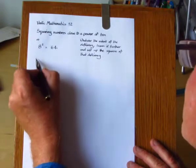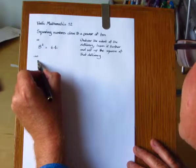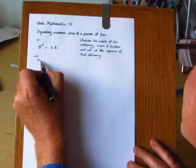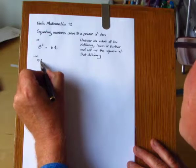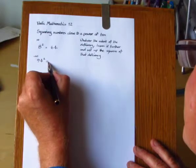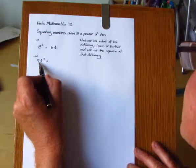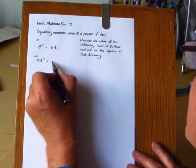Now we'll look at base 100. So we've got 94 squared. The deficiency is 6. And so we lessen 94 by 6, leaving 88.